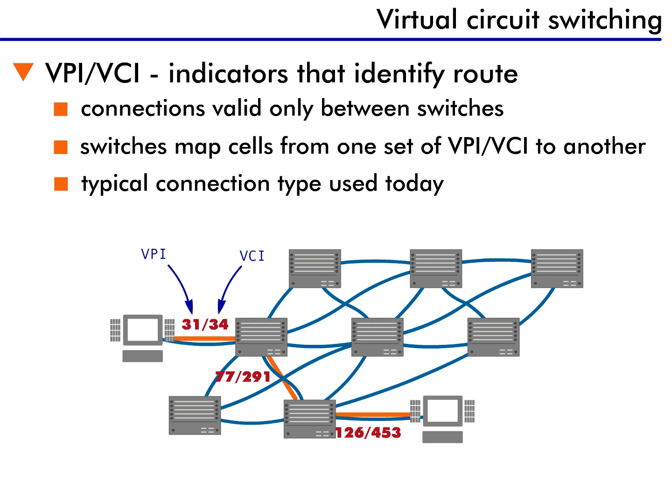So, from the computer to the first switch, I use connection 31/34. The first number is the VPI and the second number is the VCI. So, 31/34 means virtual path 31 and virtual channel 34. Then from switch to switch, I use 77/291, and then finally I use 126/453 to reach the final destination.